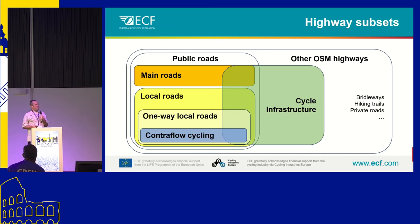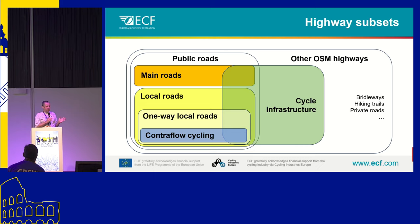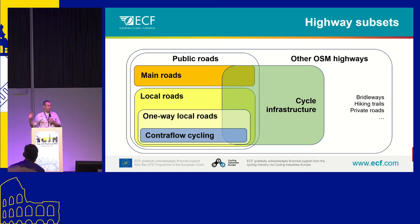There is a colorful graph that tries to explain what subsets we extract from the highways in OpenStreetMap. There is the big chunk of cycle infrastructure, but we're also interested in the public road network, divided into main roads and local roads. Within local roads, we pay special attention to one-way local roads and whether contraflow cycling or cycling in both directions is allowed. There is also a large area of road tracks not accessible for bicycles — like hiking trails — which are not used for further processing.